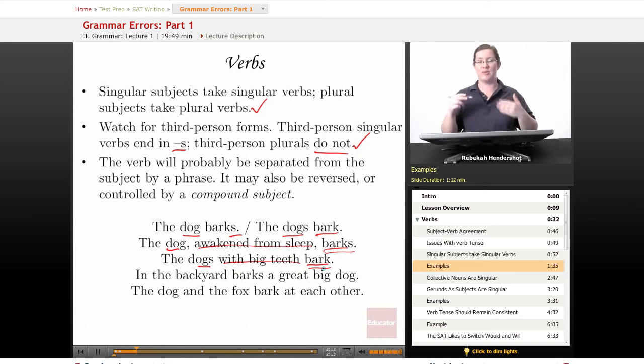For some reason, whenever we start with a prepositional phrase, well not always, but often when we start with a prepositional phrase, the verb will end up coming before the subject. English speakers just like this. It makes them feel like Shakespeare. So in the backyard is our prepositional phrase, which we can ignore. Barks is our verb, and it has to agree with the subject dog. And finally, a compound subject is where you have two or more entities performing the verb. That makes a plural subject. So in this case, the dog and the fox bark, plural verb, at each other.